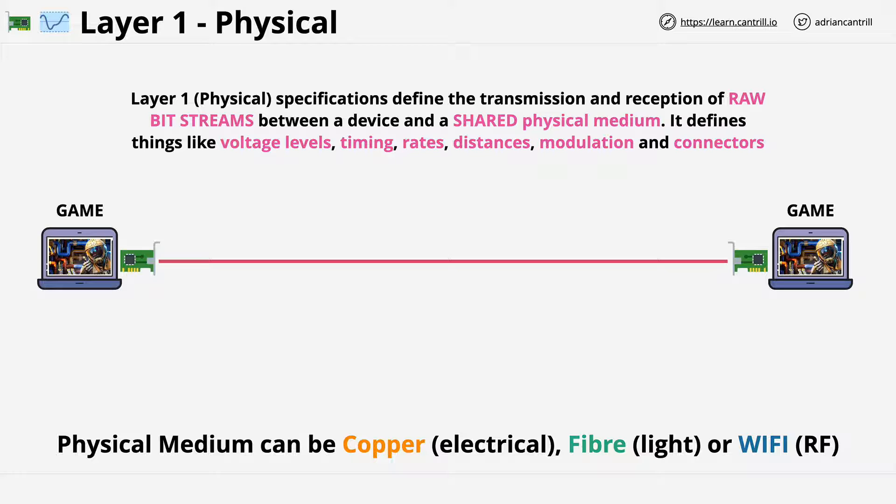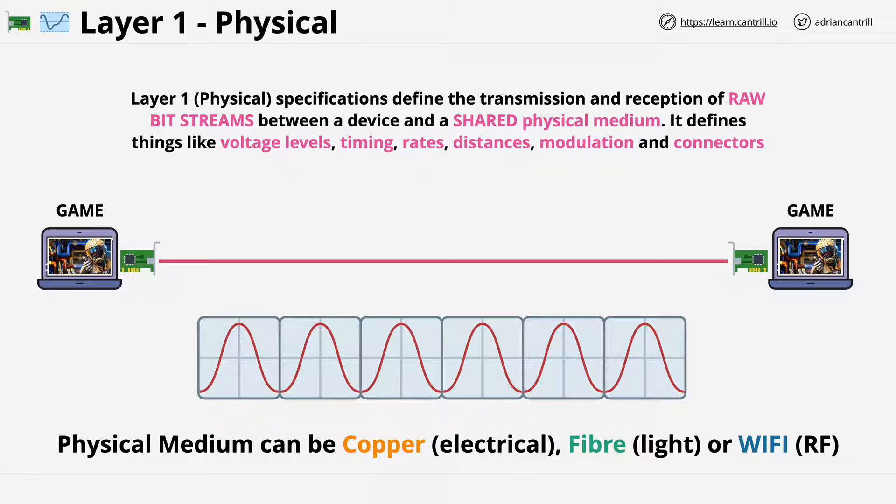The specification means that both laptops have a shared understanding of the physical medium, so the cable. Both can use this physical medium to send and receive raw data. For copper cable, electrical signals are used. So a certain voltage is defined as binary 1, say 1 volt, and a certain voltage as binary 0, say minus 1 volt. If both network cards in both laptops agree, because they use the same standard, then it means that 0s and 1s can be transmitted onto the medium by the left laptop, and received from the medium by the right laptop. And this is how two networking devices, or more specifically, two network interface cards, can communicate at layer 1.